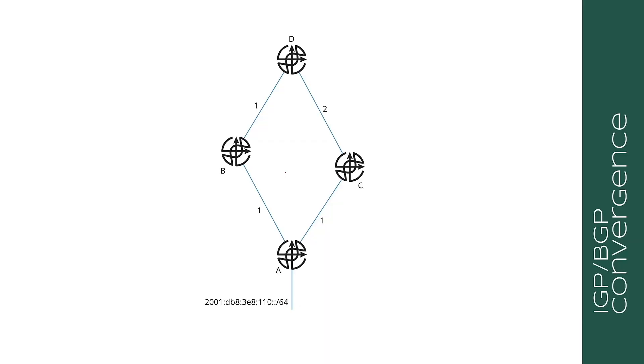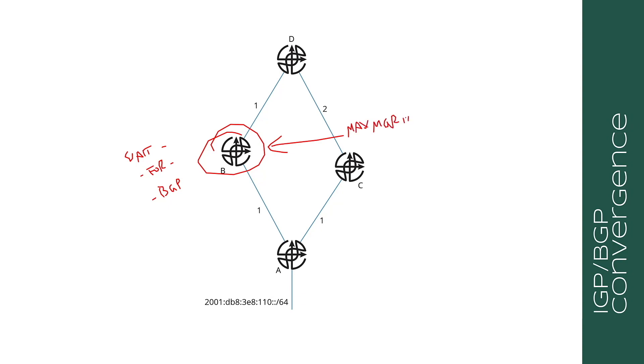That is a bad thing. The solution — and this is something you have to be aware of — is that anytime you're dealing with underlay and overlay control planes, there's always a mismatch in convergence speed. You've got to figure out how to manage that in your network design considering recursive routes. What you can do is enable something called 'wait for BGP', which almost every BGP and most IGP implementations like IS-IS have. The IS-IS process on B will advertise itself as max metric until BGP has converged.